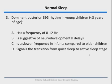Active sleep is the same as REM sleep. In young babies, before we can stage N1, N2, N3, everything that's not REM we call quiet sleep. So in a way, it's kind of easy to score sleep in the term infant to about 5 months of age because it's either active REM or it's quiet.